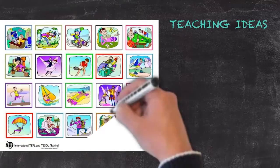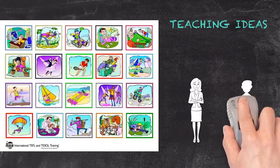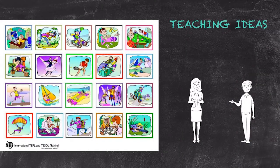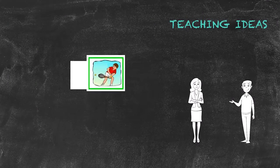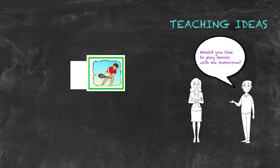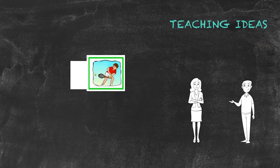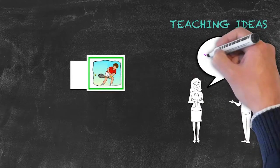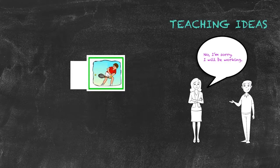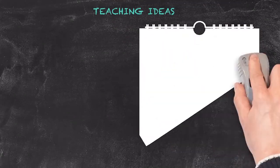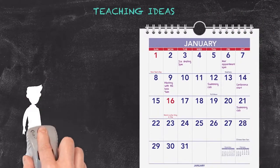Here is a teaching idea for the future continuous: a spontaneous excuses activity. Students work in pairs or small groups. The teacher prepares cut-up invitation cards placed in a pile. One student picks a card and says, for example, 'Would you like to play tennis with me tomorrow?' The other student must quickly make an excuse using the future continuous: 'No, I'm sorry, I'll be working.' Then the next student picks a card and another student makes an excuse.